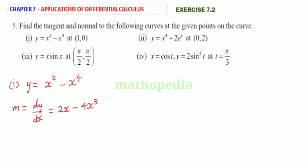The question level point is (1, 0). Therefore at (1, 0), slope m is equal to 2 into 1 minus 4 into 1 cube. So this is equal to 2 minus 4, which is minus 2.